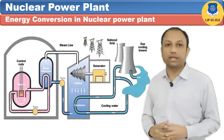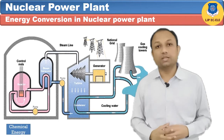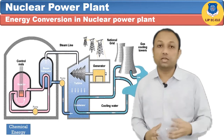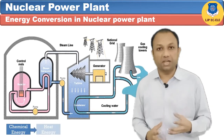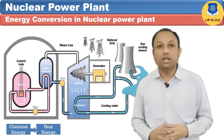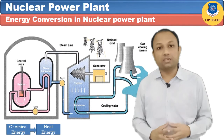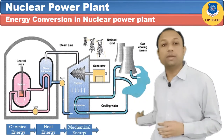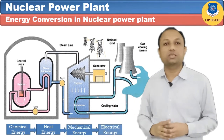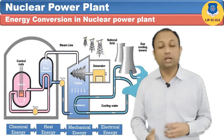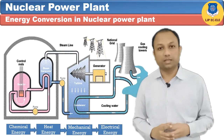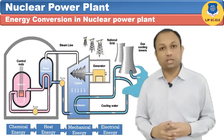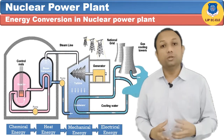Thus the nuclear energy of nuclear fuel is converted into heat energy, the heat energy is converted into mechanical energy, and the mechanical energy is converted into electrical energy. This is about the energy conversion in a nuclear power plant.